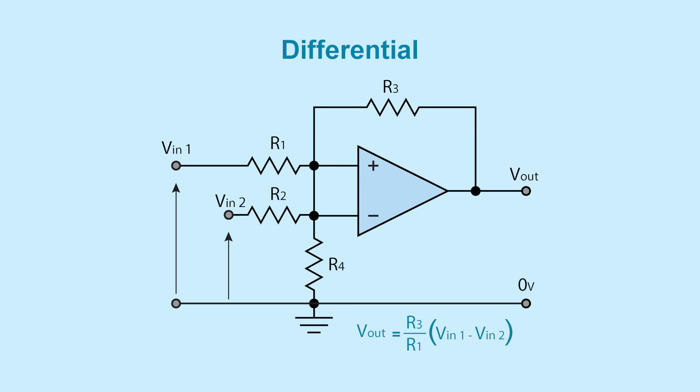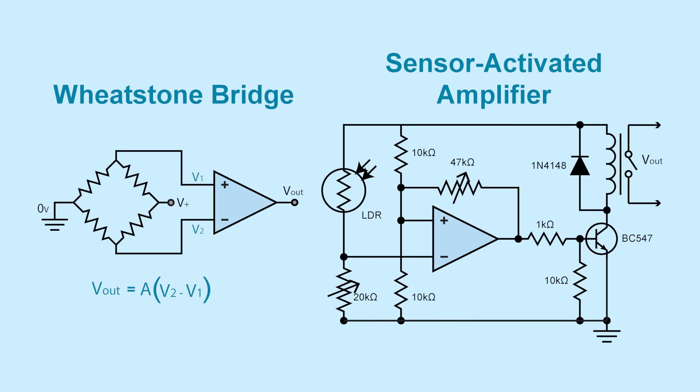While most types of op amp circuits have one input grounded, a subtractor or differential amplifier circuit has signals connected to both inputs. The voltage difference present between those two inputs is then amplified. Differential amplifiers can be used to make a Wheatstone bridge or a sensor-activated circuit, like this one that uses an LDR.